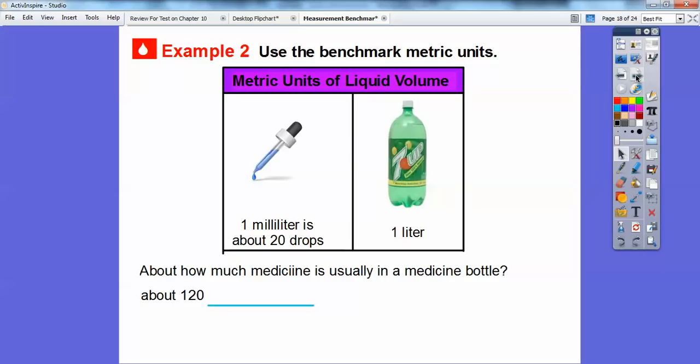All right, so here we have benchmarks for units of liquid volume. So a milliliter, a unit for liquid, is about 20 of these little drops. So it's about a whole little full thing of an eyedropper right here. That would be what's called a milliliter right here. And then this is a liter, you know, like a big old soda bottle is a liter right here.